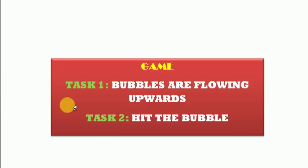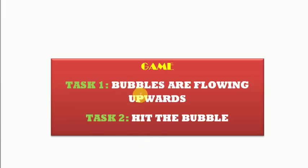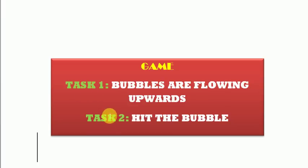So these two tasks have to be performed simultaneously. How will these two tasks be performed simultaneously? Now suppose the whole game is a process and we make two functions for these two tasks. Then we have to call each function one at a time — we can only call one function at a time. So only one task can be performed at a time. But if we want these two tasks to be performed at the same time, then this will not be possible.